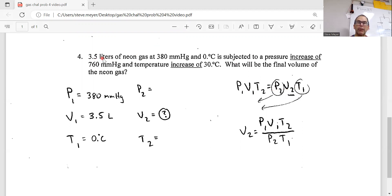Notice the 3.5 liters, the 380 millimeters mercury, and the zero degrees Celsius all go together as initial conditions right here. So I wrote the pressure, the volume, and the temperature there.